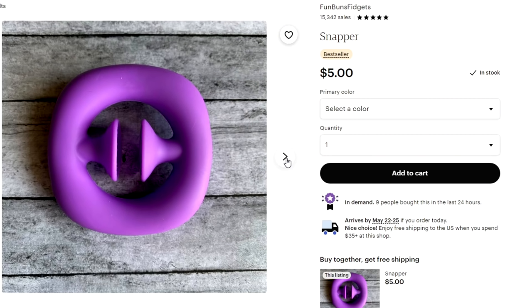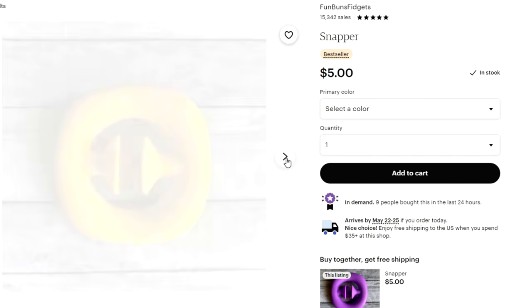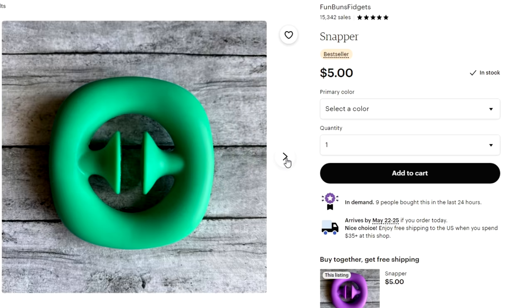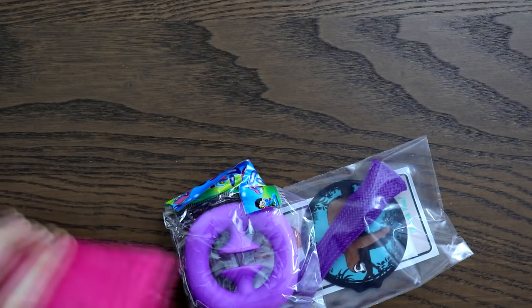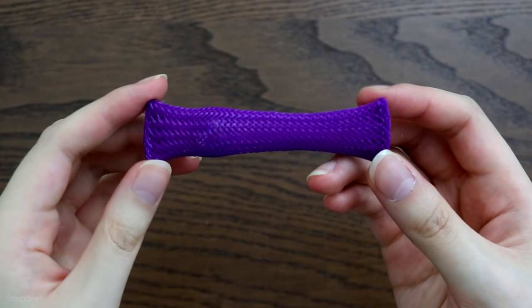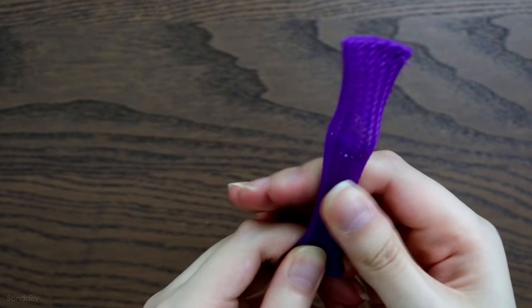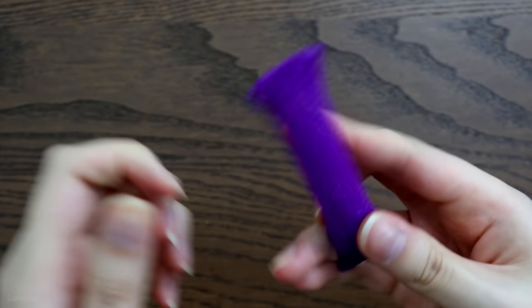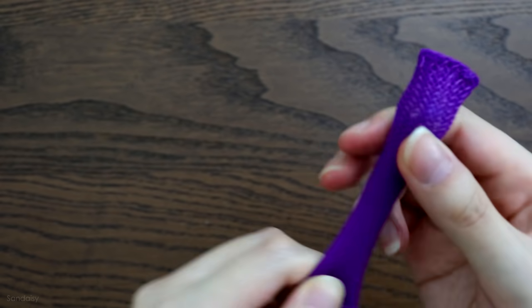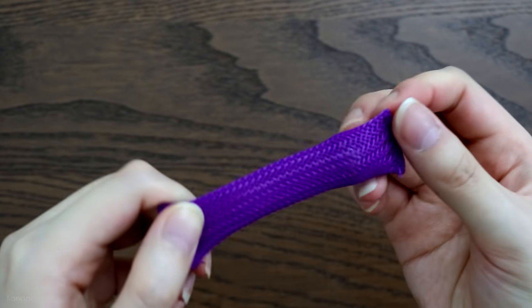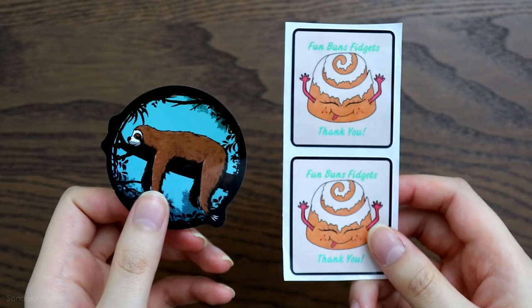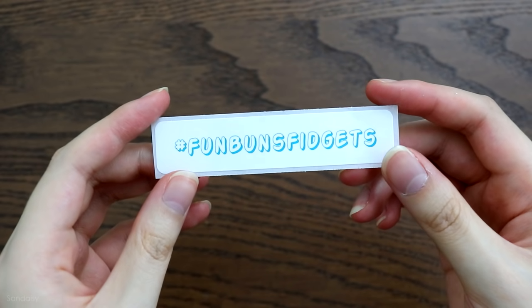This one is called a snapper and it's available in a few different colors. I chose the purple one. The seller was generous and gave me another fidget toy. I don't know the exact name for this one but it's basically a marble ball inside a really tight enclosed netting and you just push the ball with your hands and that's supposed to provide like a sensory experience. They also gave me some stickers of their branding.